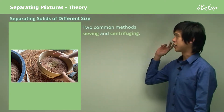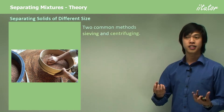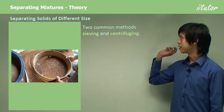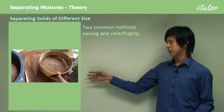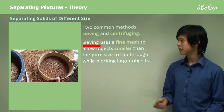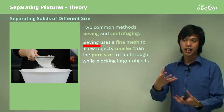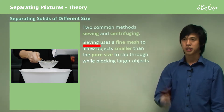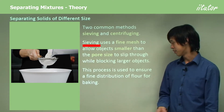We're going to talk about separation in terms of scenarios where we want to separate two different things. The first scenario is separating solids of different size — where we have two solids that differ in grain size and we want to separate them. Two common methods are sieving and centrifuging. For those who bake regularly, you would use a sieve to separate flour in order to get a very fine mixture. Sieving uses a fine mesh to allow particles smaller than the pore size to slip through while blocking the larger objects.